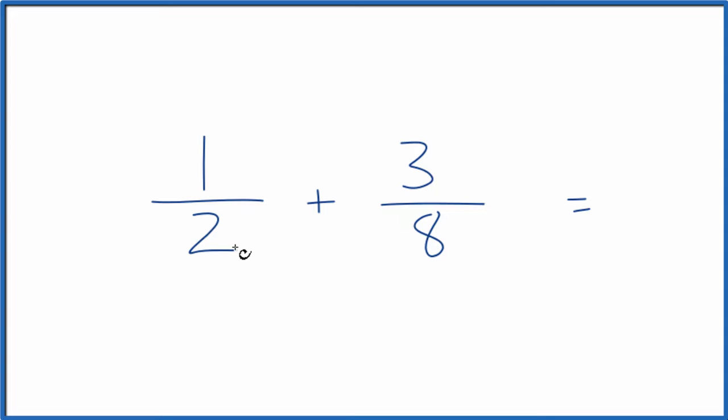To do that, I know that two goes into eight four times. So if I multiplied two times four, that would give me eight, and then I'd have a common denominator. But I have to multiply both the top and the bottom by four. That way, I don't change the actual value, because four divided by four, that's one. I'm multiplying by one. It doesn't change the value.